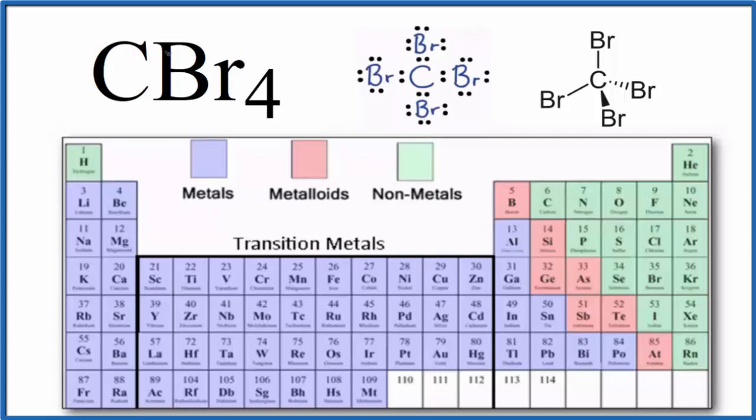So we find carbon, and that's right here. So carbon's a nonmetal, and then bromine. Bromine's down here, and that's also a nonmetal.